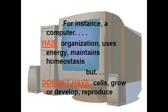Let's take a computer as an example. A computer does have organization — its parts are organized. Computers use energy — you have to plug them in and they need electricity to run. And a computer can maintain a kind of homeostasis: when it gets too hot inside, a fan turns on to blow cool air and get rid of the heat so the parts don't overheat. However, a computer is not actually living. It does not have cells, it does not grow, its parts do not develop into other things, and it cannot reproduce on its own.